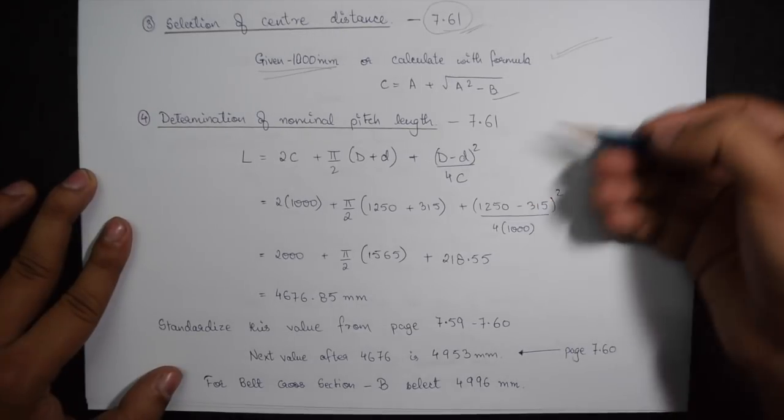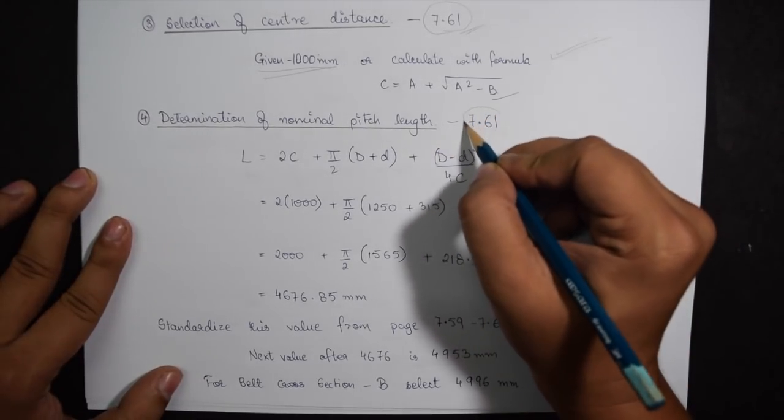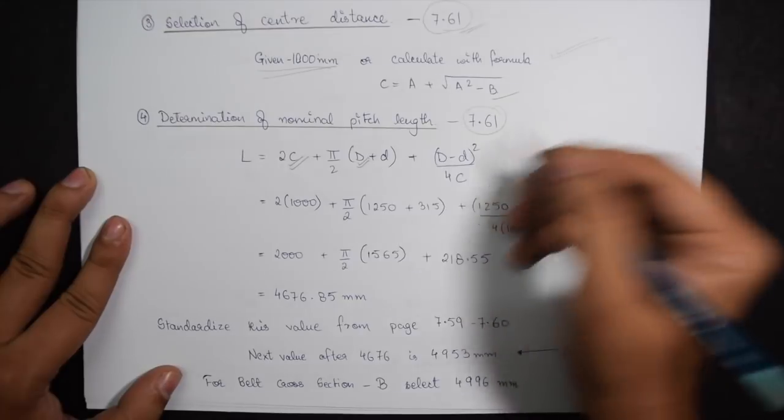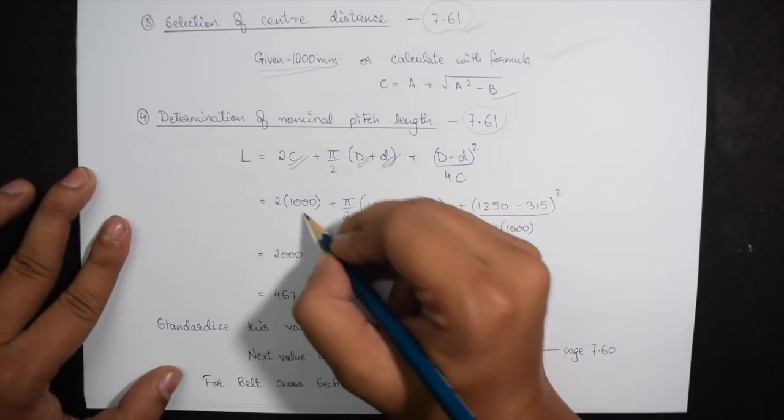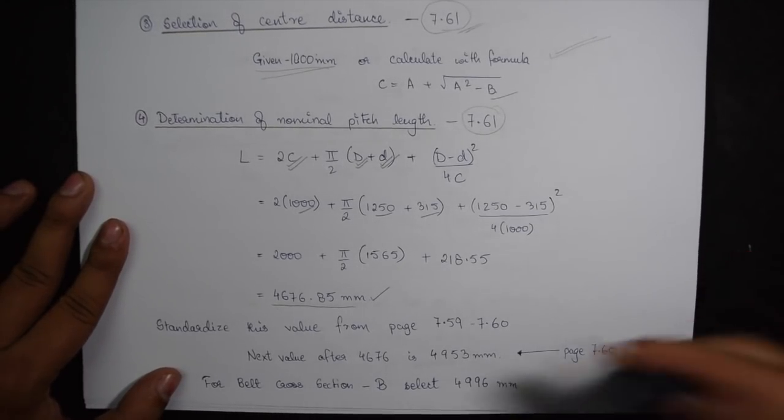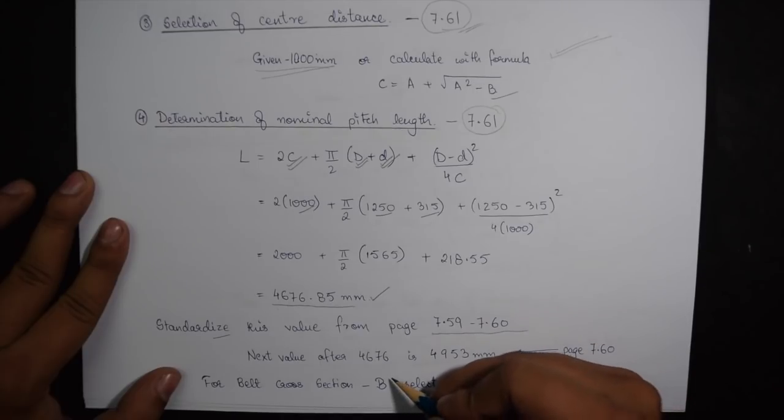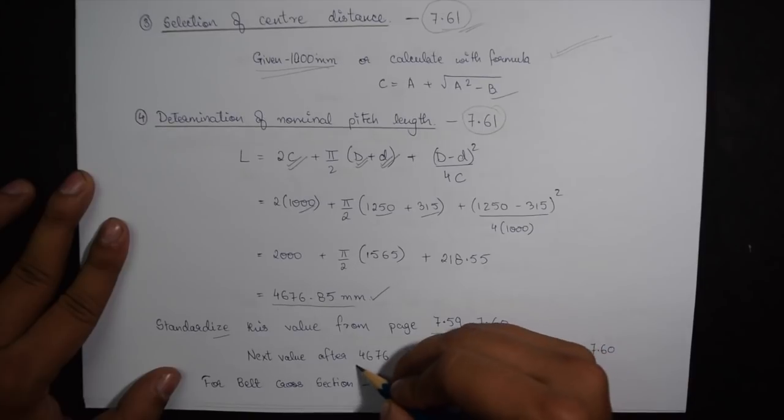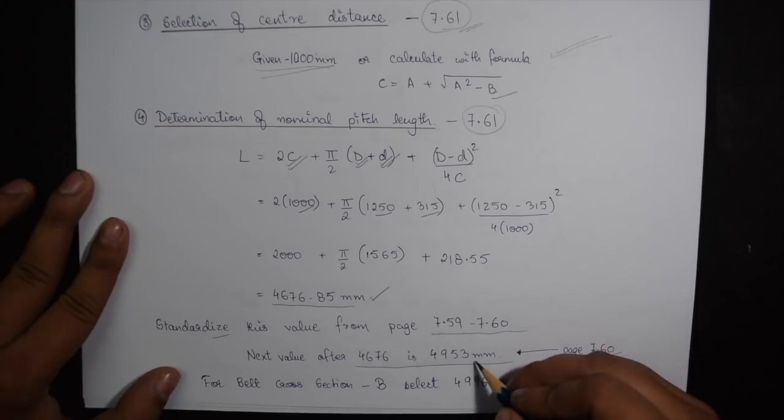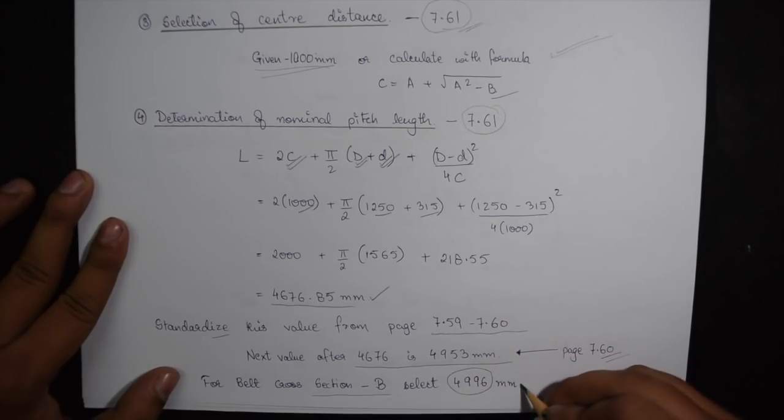Just above the center distance formula we have a formula for calculating the nominal pitch length of the belt. As we see this formula by putting in the values of C which is the center distance which is 1000, capital D is 1250 and small d is 315 mm, we get an answer 4676.85 mm. Now again we need to standardize this value. For standardizing we will go to page 7.59 or 7.60. On 7.60 under nominal inside length the value next to 4676 is 4953. So this is the value we will be choosing but the cross section type of belt was B so we will be choosing 4996 which becomes our nominal pitch length now.